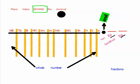Just a quick review with place value. We know that when we're looking at whole numbers, we have our ones, tens, hundreds, thousands, ten thousands, and so on. Once we have the decimal, we know that anything to the right of it is actually less than one whole.